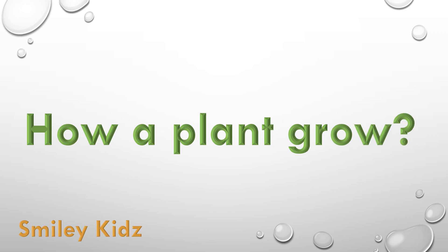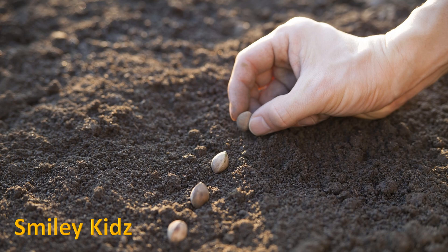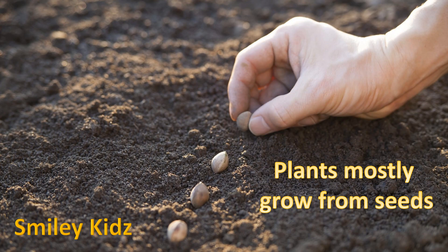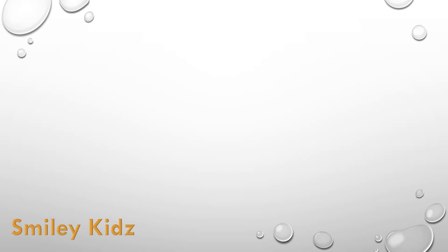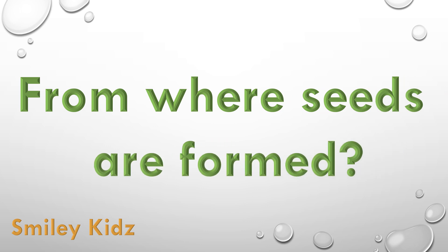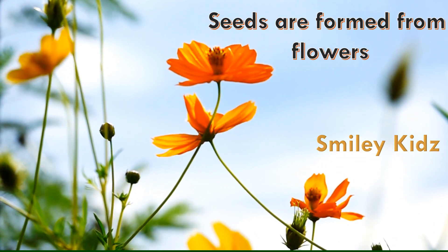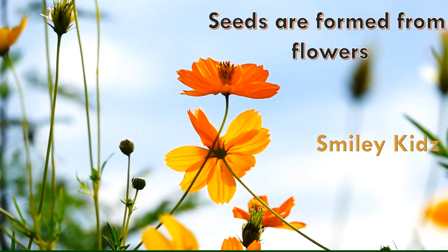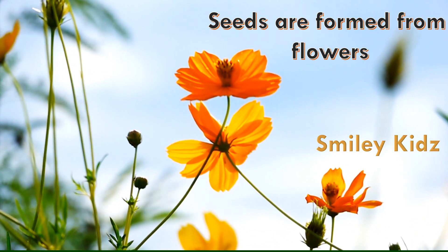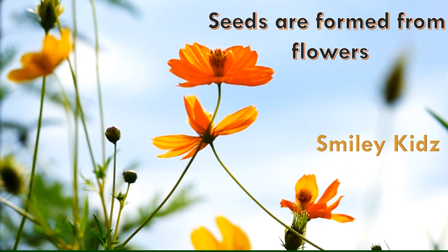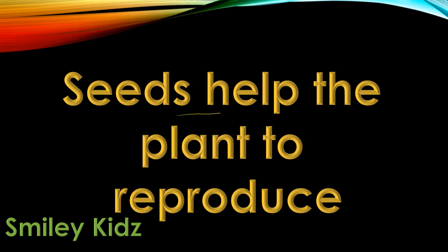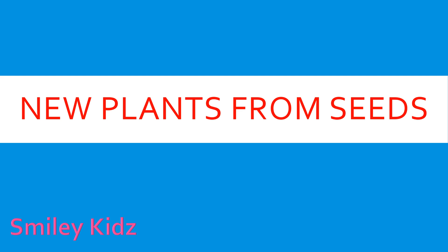How does a plant grow? We all know that plants mostly grow from seeds. From where are seeds formed? Seeds are formed from flowers. A flower has pollen grains that help in the formation of seeds. So we can say that seeds help the plant to reproduce. Now we are going to learn how a new plant grows from a seed.